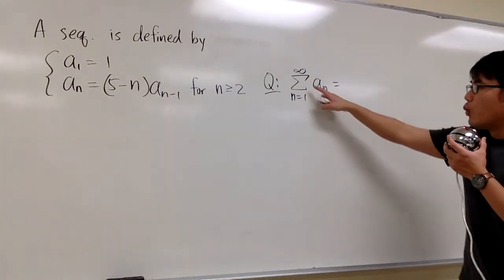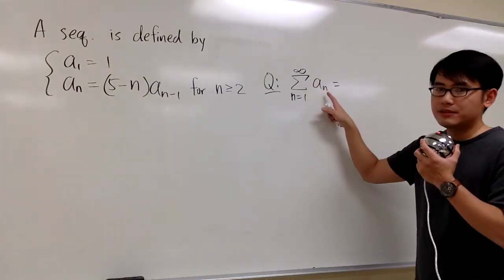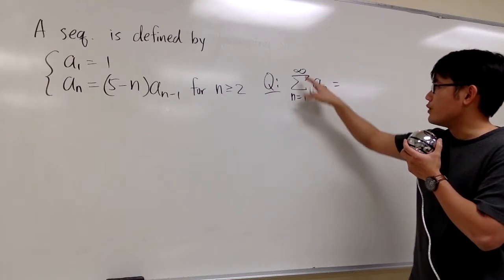And then the question is asking us, what if we add up all the terms? So this right here, the summation when n goes from 1 to infinity of aₙ.